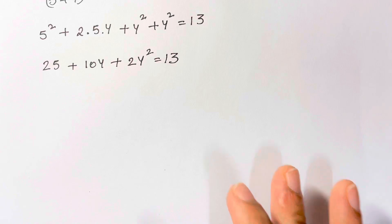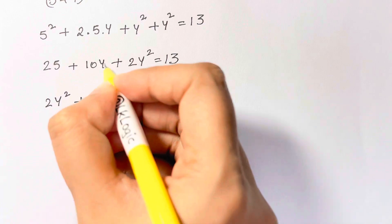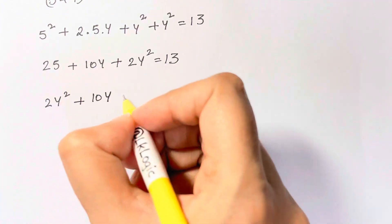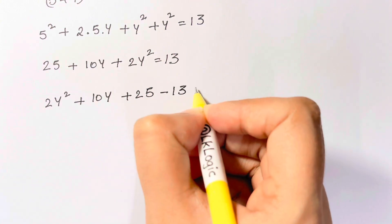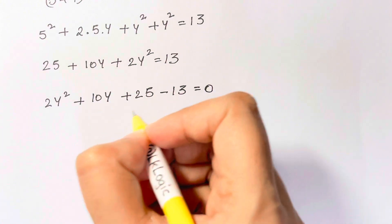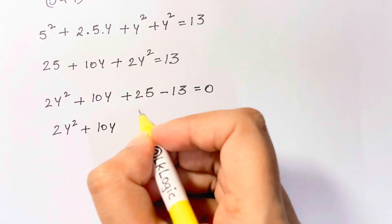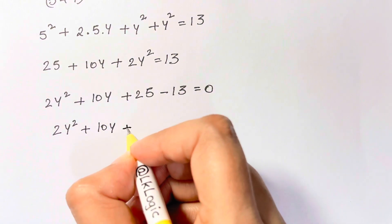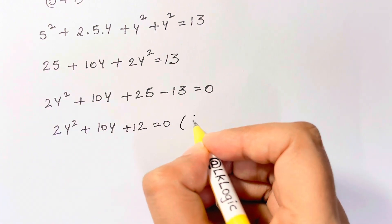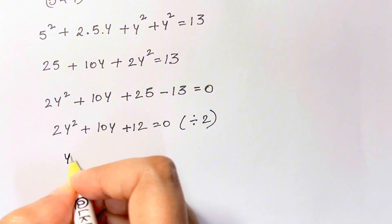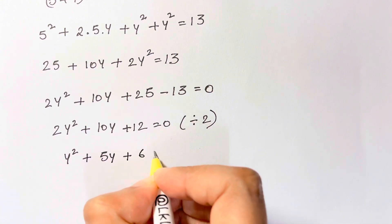Now let's rearrange the equation: 2y squared plus 10y plus 25, bring 13 to this side — it's negative 13, or subtract 13 on both sides, one and the same. Now you have 2y squared plus 10y plus 25 minus 13, which is plus 12, is equal to 0. As you can see, all these are even numbers, so let's divide by 2. We have y squared plus 5y plus 6 is equal to 0.